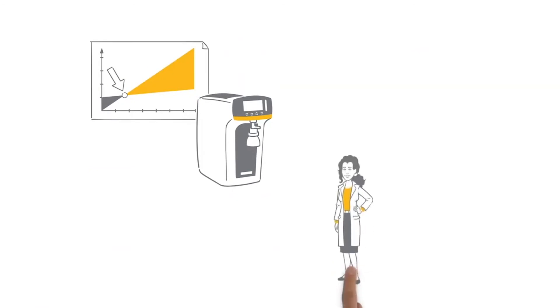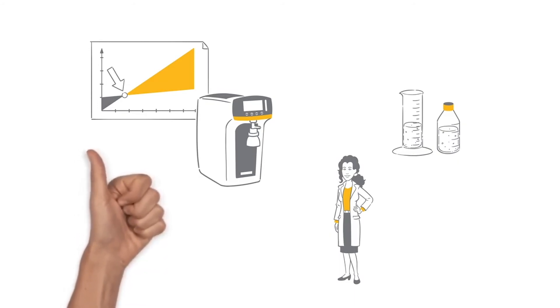Also, Sophia can produce precisely as much Ultra Pure Water as her lab needs at any given moment. This way, delivery times and storage place for water bottles cease to apply.